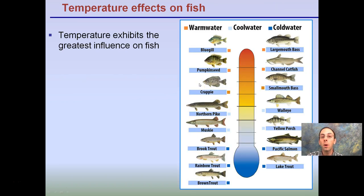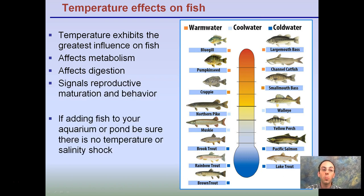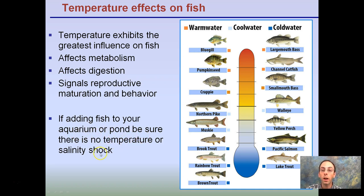Lastly, we want to think about more than just osmoregulation in fish — there's also temperature to consider. Temperature exhibits the greatest influence on fish, affecting their metabolism, digestion, and signals to reproduce. If adding a fish to an aquarium or pond, be sure there's no temperature or salinity shock, and you dramatically increase the odds that the fish will survive the next 12 to 24 hours.